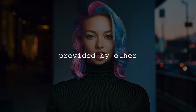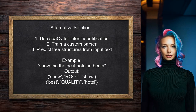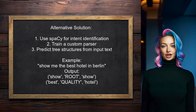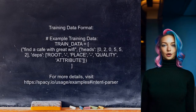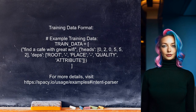Now let's look at the answers provided by other users. An alternative approach suggests using SpaCy to train a custom parser for identifying chat intents. This method allows you to predict tree structures over your input text, which can enhance understanding of user queries. To train the model, you need to format your training data with texts, heads, and dependency labels. This structured approach helps the model understand the relationships between words in a sentence.